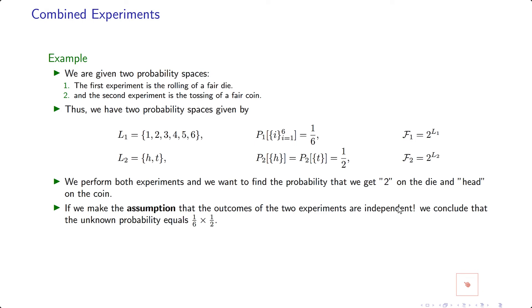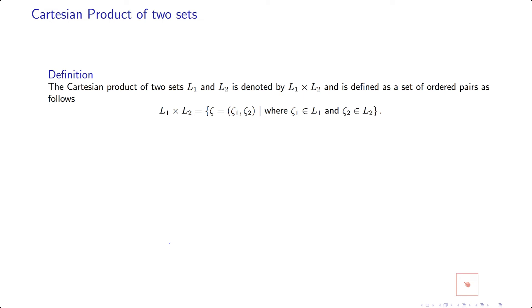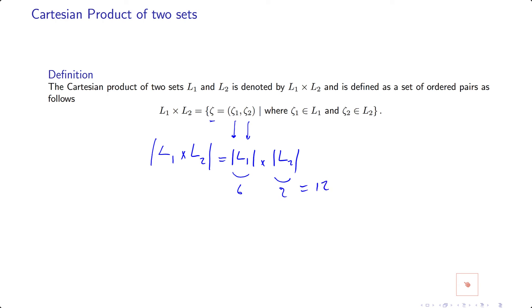If you assume that the outcomes of the first experiment and the outcomes of the second experiment are independent — meaning that the probability of any event from their intersection is equal to the product of the probabilities — then we can say that the probability of any elementary event from the combined experiment is 1 over 12. We need to combine these probability spaces using the Cartesian product. The number of elements in L1 times L2 equals the number of elements in L1 times the number of elements in L2 — in this example, six times two equals twelve possible outcomes.